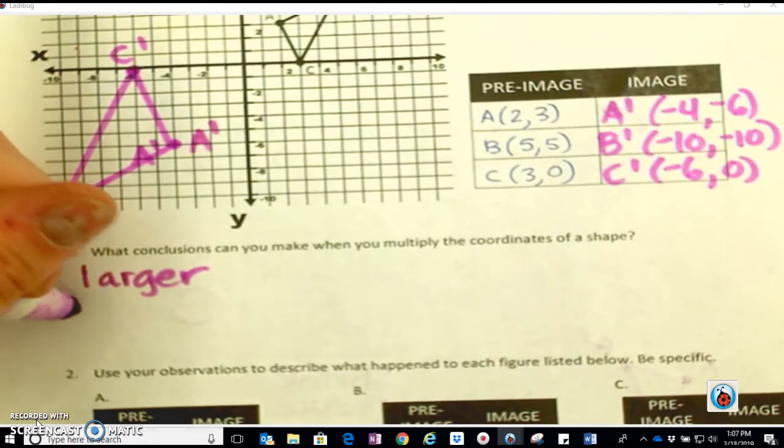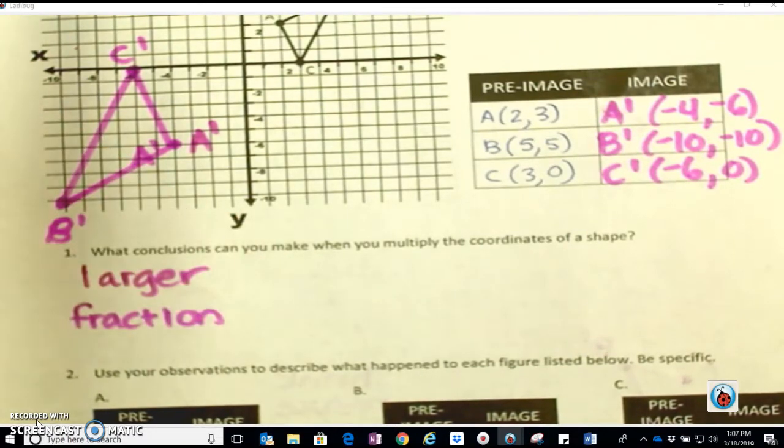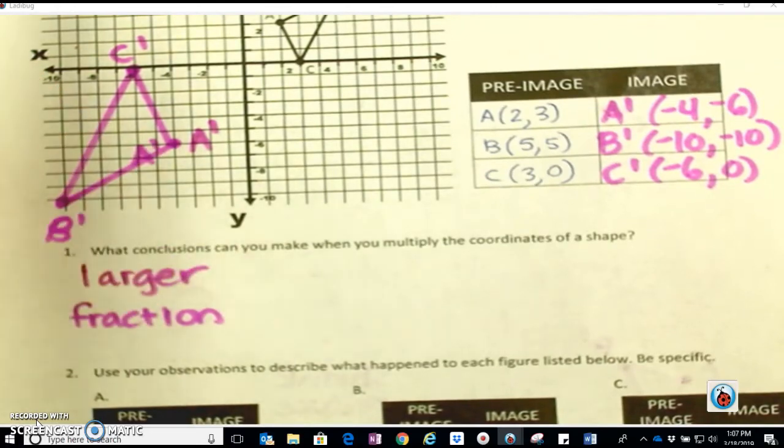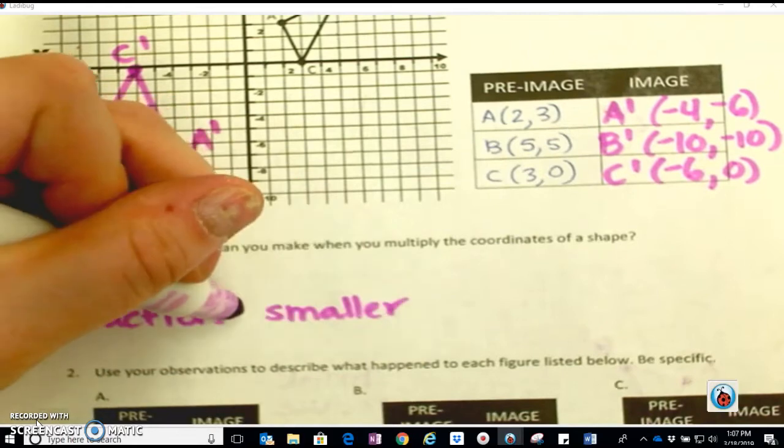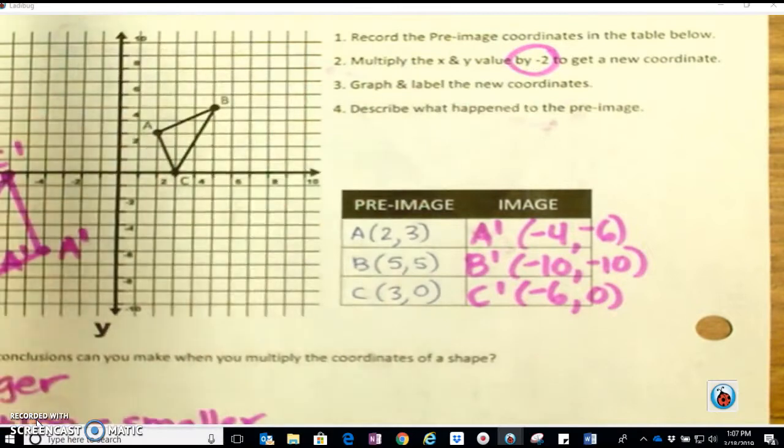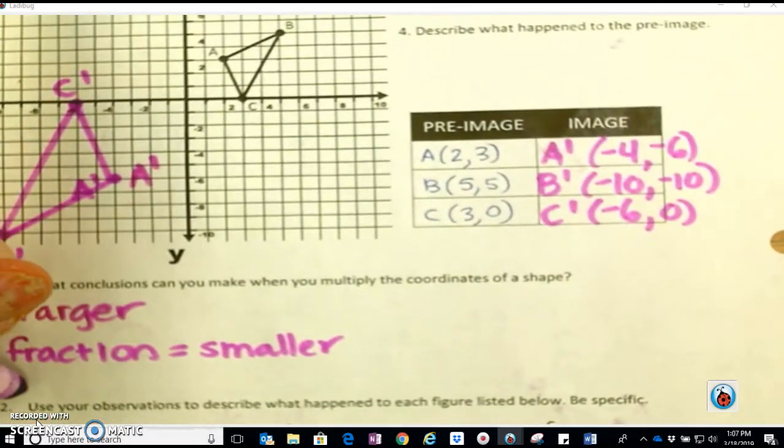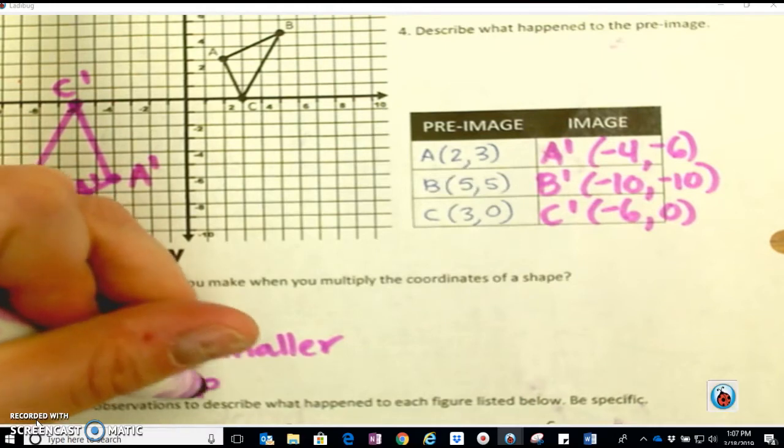When we multiplied by a fraction, which is kind of like dividing, but we are always going to talk about multiplying, it got smaller. And then when we had a negative number, our shape actually even turned. So a negative number, the shape turns.